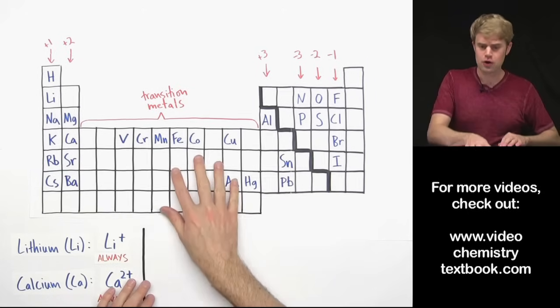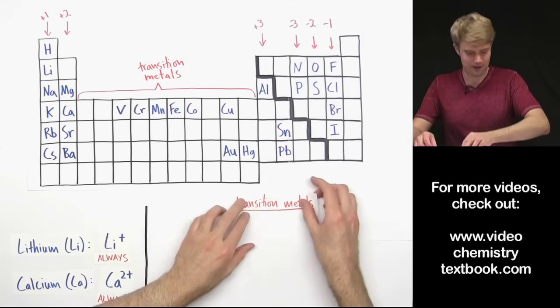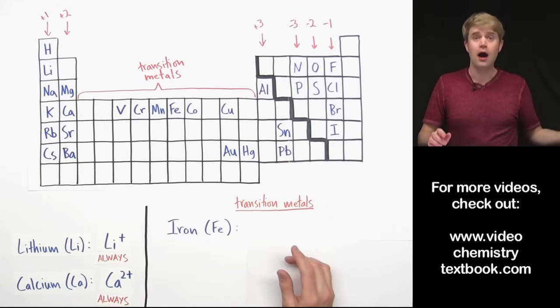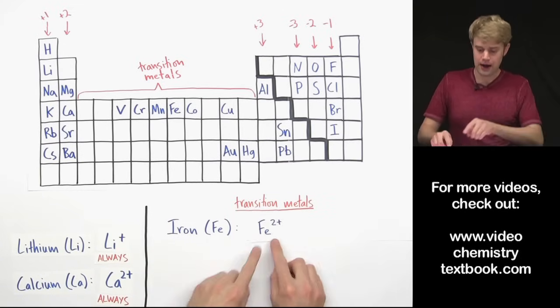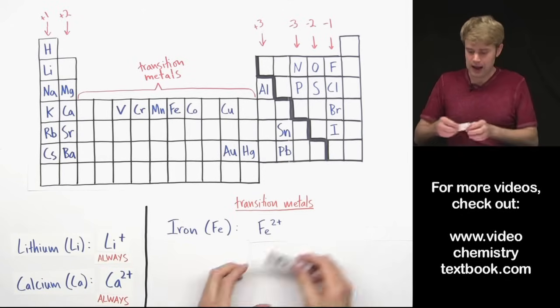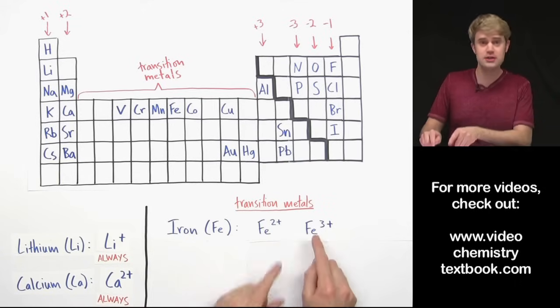On the other hand, transition metals are a little bit more loosey-goosey about things. Iron, Fe for example. Iron can make an ion that's 2+, but it can also make an ion that has a 3+ charge. So it's able to make both these types of ions.